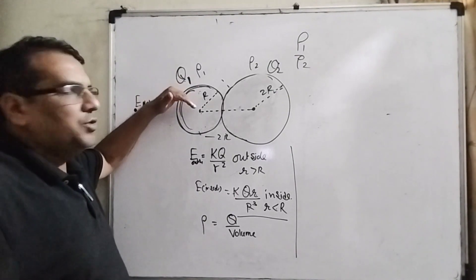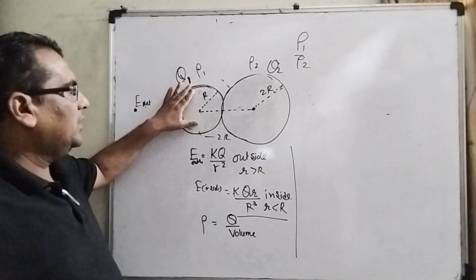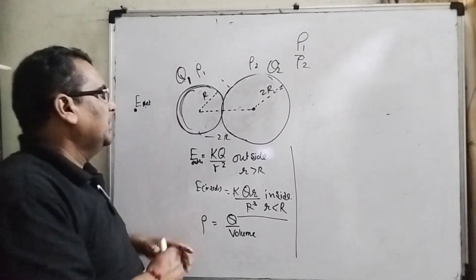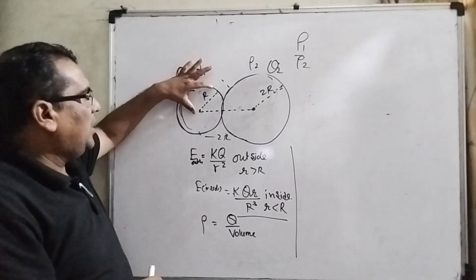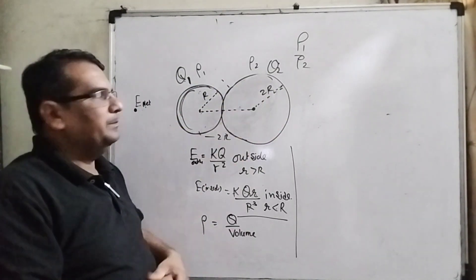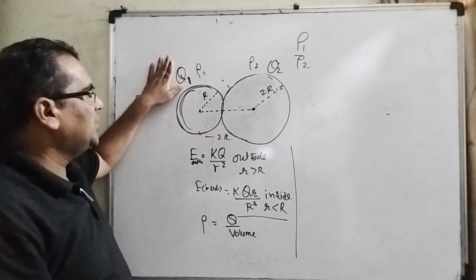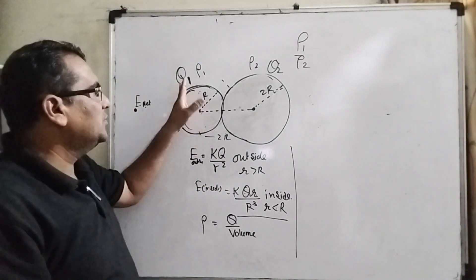What is given in this question? You have given two spheres, non-conducting spheres. They are kept in touch with each other. The radius of the smaller one is capital R and the radius of bigger one is 2R, and charge density is rho 1 and rho 2 respectively, and similarly charge q1 and q2 on the smaller and bigger.